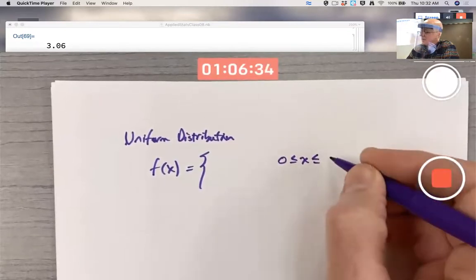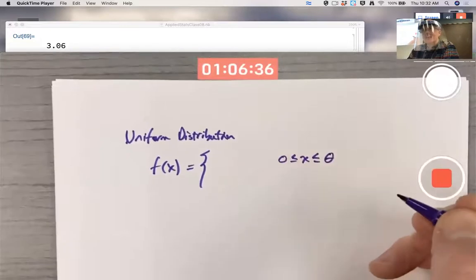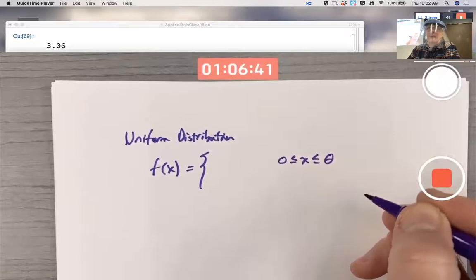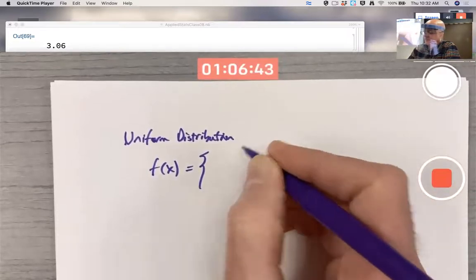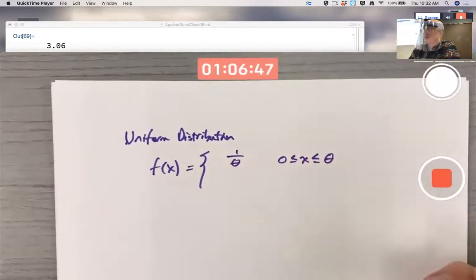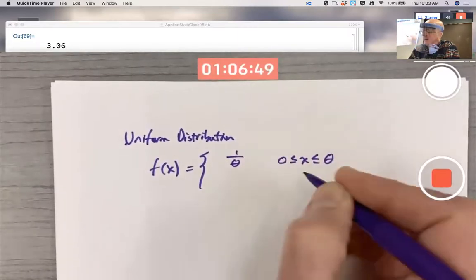But weirdly enough, it's traditional to call it theta. But theta is no angle. We're so used to theta being an angle, which would make the formula here 1 over theta when you're between 0 and theta, and then 0 otherwise.